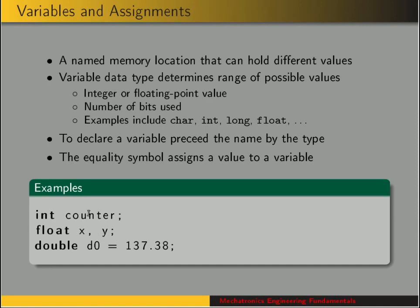Counter can only have integer values. We also have another variable called D0, which is a floating point value but has twice as many bits as x and y. In this line, we declare D0 and also assign a value to it in the same statement — so now D0 has the value 137.38.